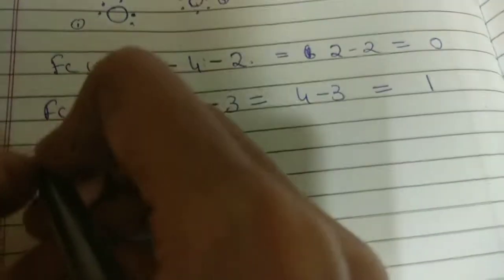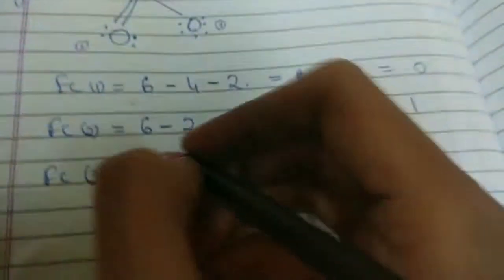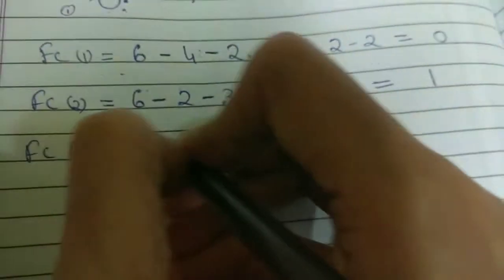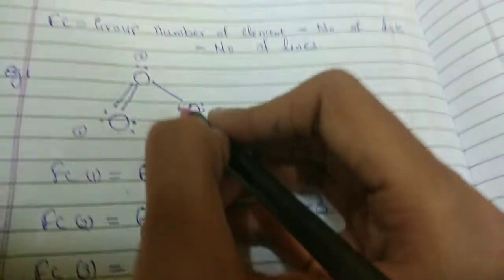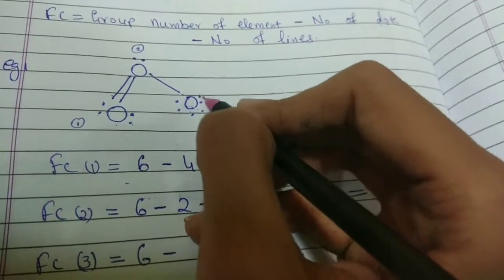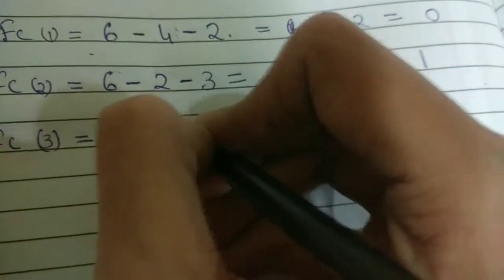Let us move on to the third oxygen atom. Now, FC for 3. So, again the group number won't change. So, we write 6 over there. Number of dots. Now, this oxygen has 3 lone pair of electrons. That is, it has 6 dots. So, we write 6 over here in place of dots.